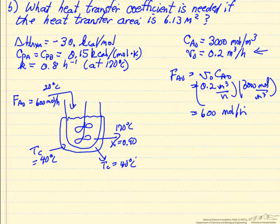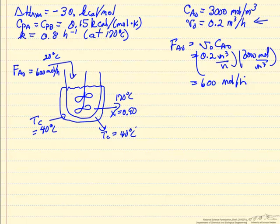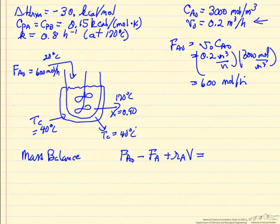What we want to do now is apply mass balances to this problem, and the mass balance we're going to apply is for component A. We have A flowing in, A flowing out. They differ because we have some reaction. This is rate of reaction per volume times the volume in the liquid reactor, and since we're at steady state, this is equal to zero.